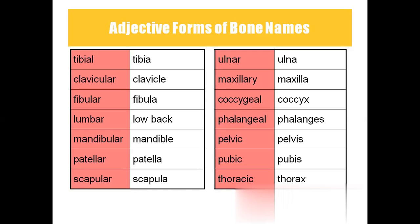Scapular means scapula, which we call the shoulder blade, present on the pectoral girdle. Ulnar means ulna, which is a forearm bone — radius and ulna both come under forearm bones. Similarly, tibia and fibula come under leg bones. Maxillary means upper jaw. Coccygeal means coccyx, the tail bone. Phalangeal means phalanges, which are the finger bones. Pelvic means pelvis, which has three parts: ilium, ischium, and pubis. Thoracic is related to the thorax, the chest.